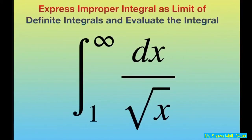Hi everyone. We're going to express our improper integral as a limit of definite integrals and evaluate the integral. We have 1 to infinity of dx divided by square root of x.